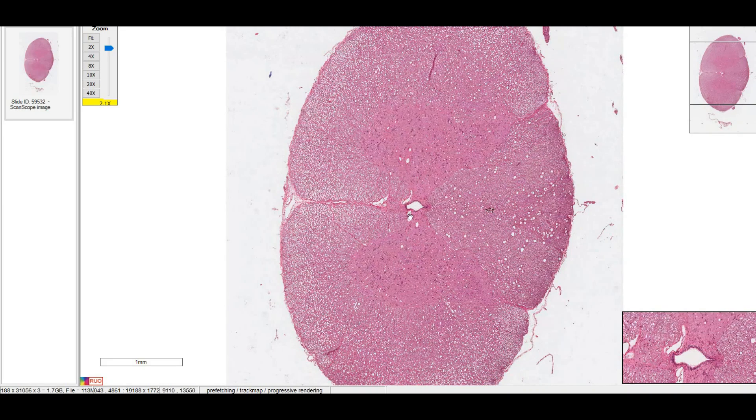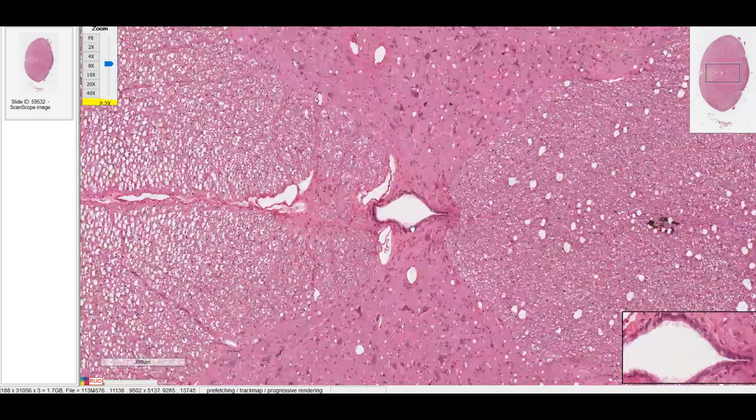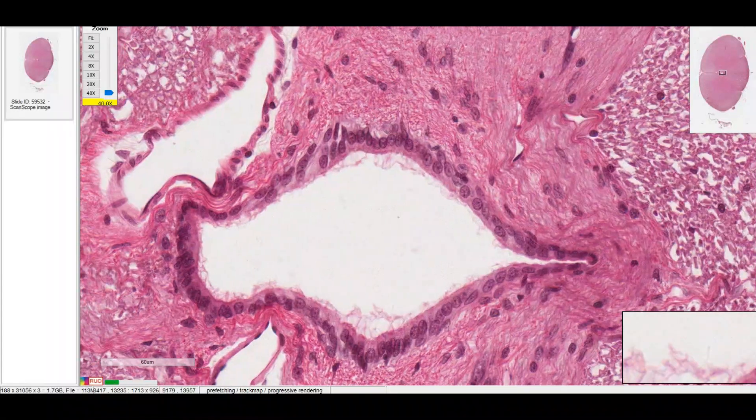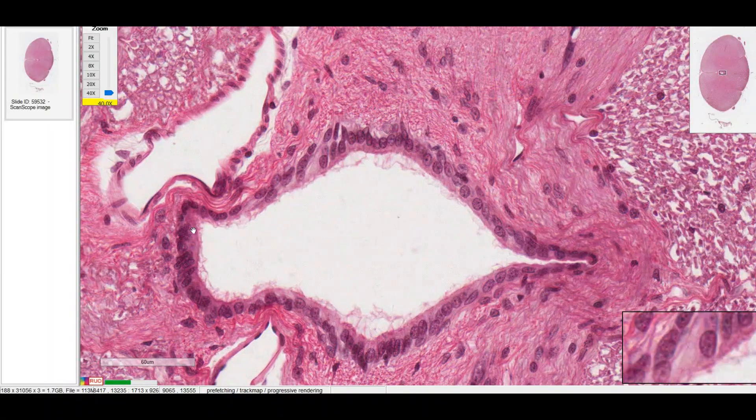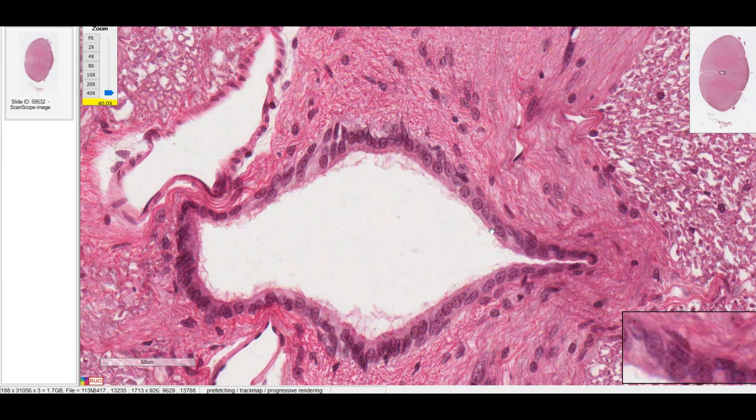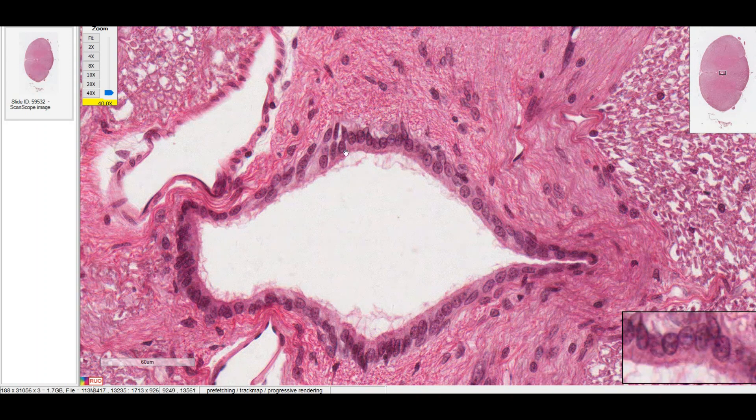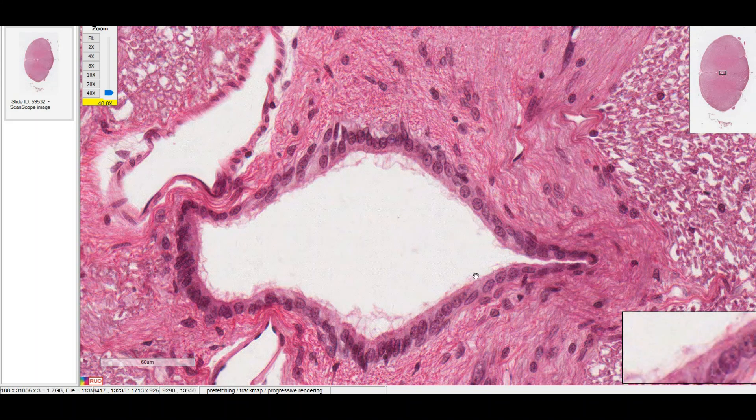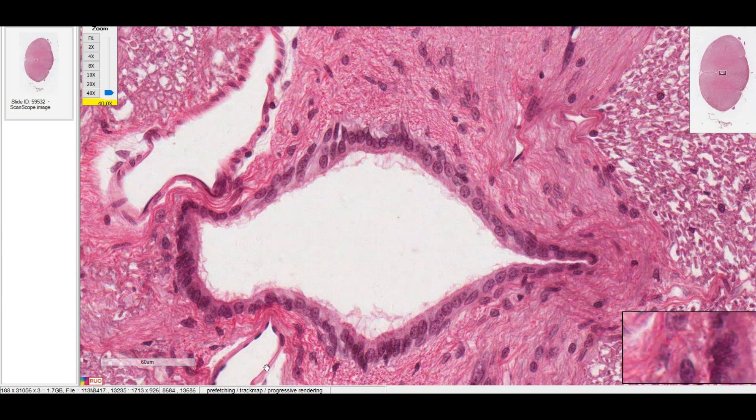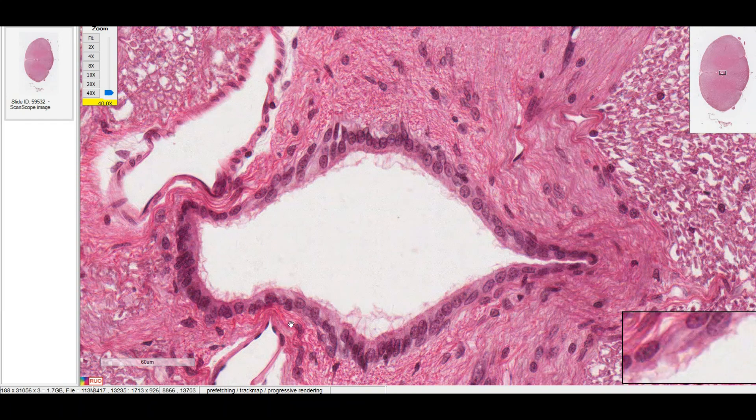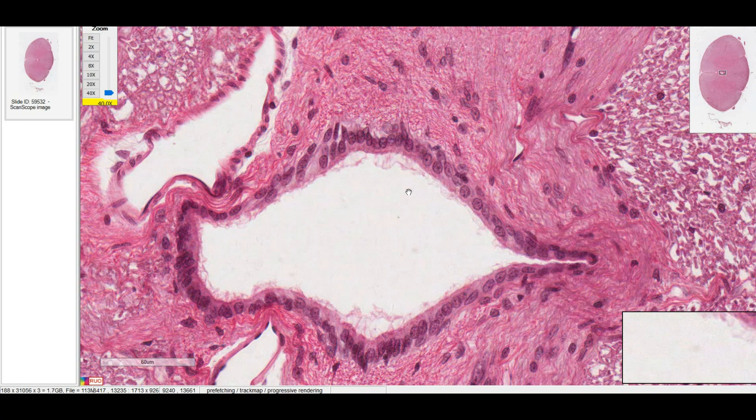On this next slide, we're mostly interested in the central canal here. It's lined by ependymal cells. These are the ones that are secreting CSF. And you can see this simple cuboidal ependymal cells are ciliated. So not only are they creating the CSF, they're kind of brushing it along to keep it moving. And just a quick note about the central canal. This is the thing that expands when you have syringomyelia. But normally this would close off with age.